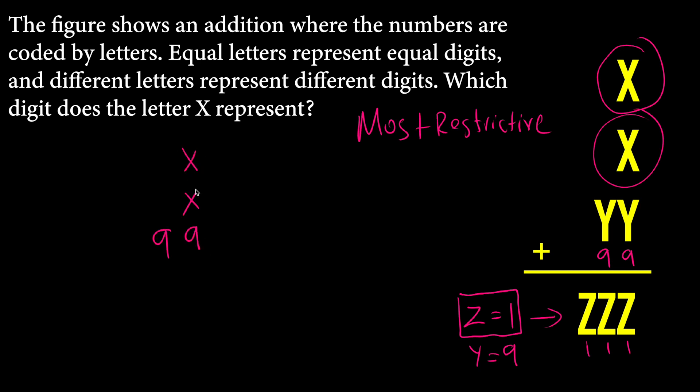X plus X plus 99 should give us 111. So basically this is a pretty simple addition problem. What you add to 99 so that generates 111? So you can subtract 111 and 99. It will give us 12. And 2X is 12. So X should be equal to 6. This is our solution. X equals 6 is our solution.